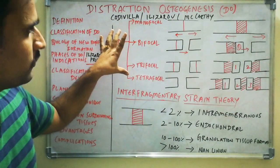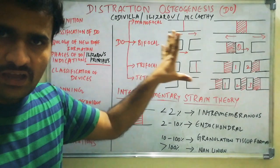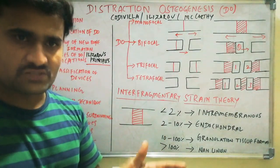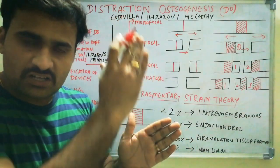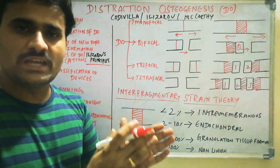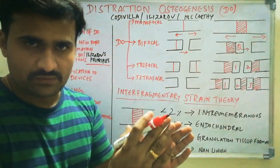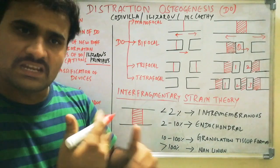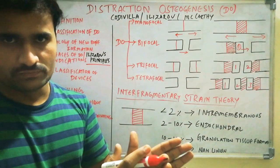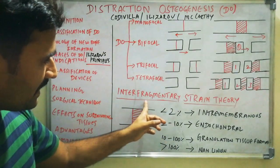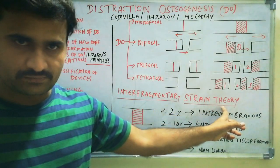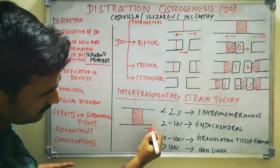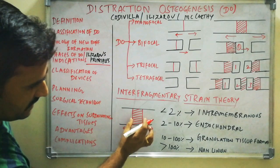This is the basic classification of distraction osteogenesis. Now we will discuss the biology of new bone formation — how new bone formation occurs. Once you osteotomize the bone, initially there is formation of a hematoma, that is a blood clot. This blood clot organizes into callus formation and eventually into new bone. There is an interfragmentary strain theory, which is very important.